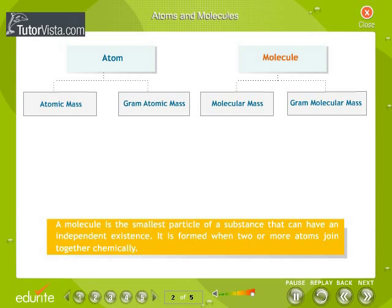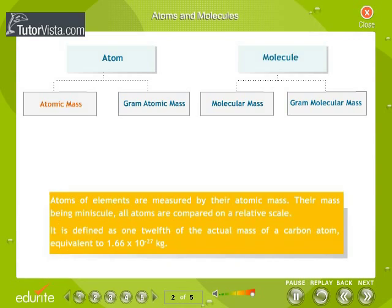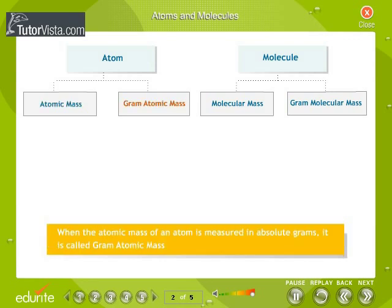Atoms of elements are measured by their atomic mass. Their mass being minuscule, all atoms are compared on a relative scale. It is defined as one twelfth of the actual mass of a carbon atom, equivalent to 1.66 into 10 to the power minus 27 kg.